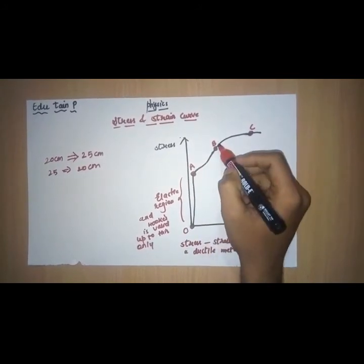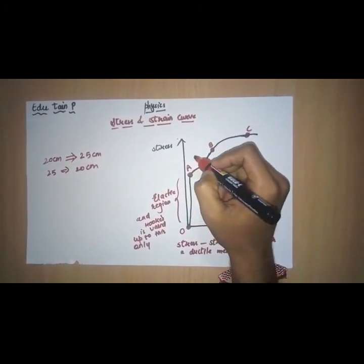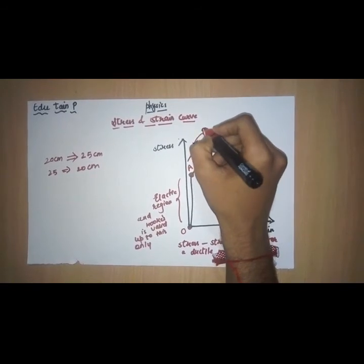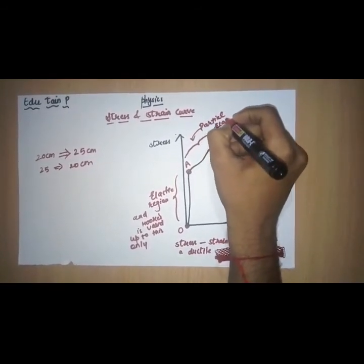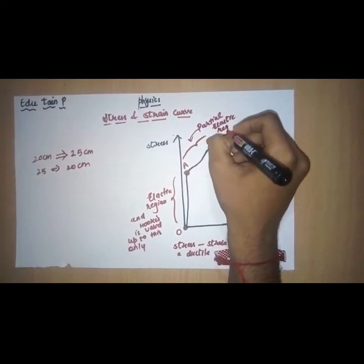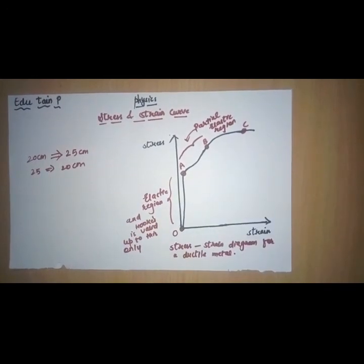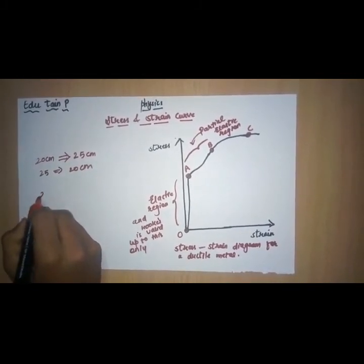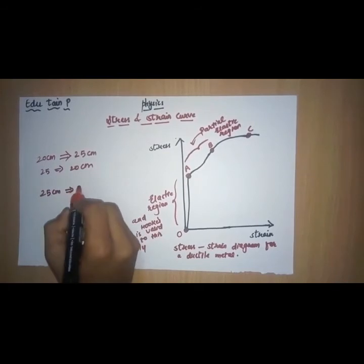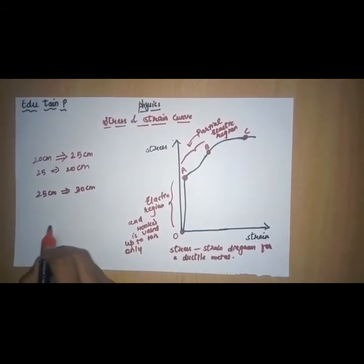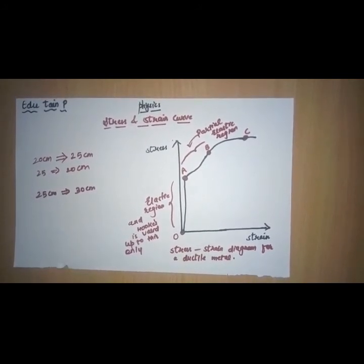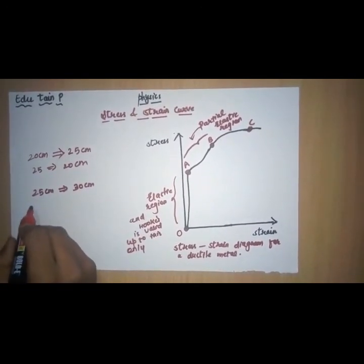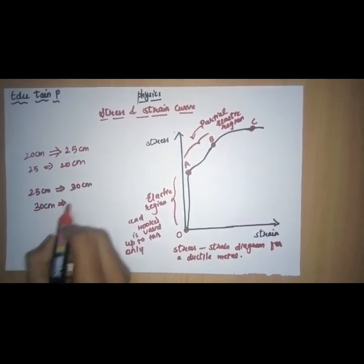Now, consider the point A to B. The point from A to B is known as partial elastic region or point. Now, what is partial elastic region? Partial elastic region means, suppose we stretch a wire of 25 cm to 30 cm. Now, the wire tries to regain its original length, but it doesn't completely regain its original length, that is from 30 cm to 28 cm.